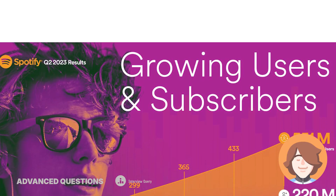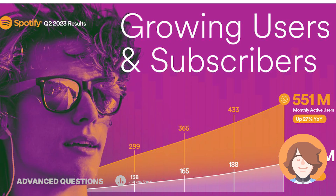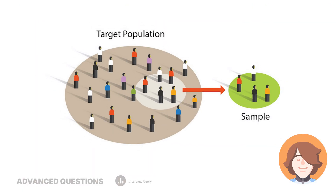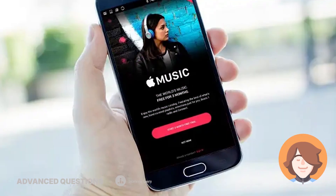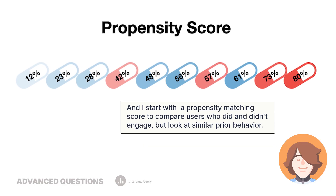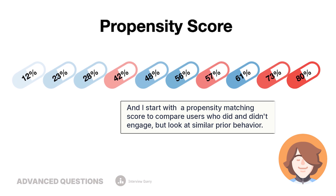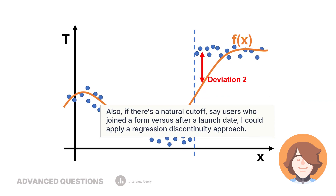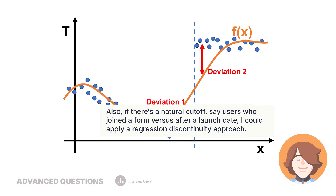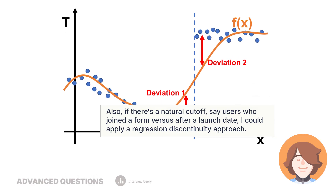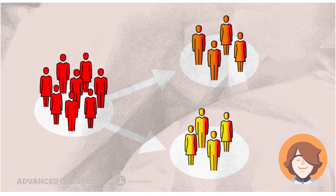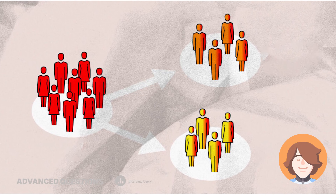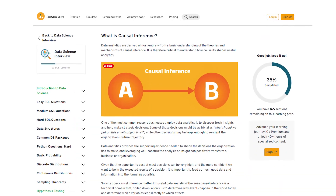I'd start with propensity score matching to compare users who did and didn't engage but look at similar prior behavior. Also, if there's a natural cutoff — say users who joined before versus after a launch date — I could apply a regression discontinuity approach. Alternatively, I could use a difference-in-differences setup: compare changes in engagement over time between playlist users and a control group. If you want to check out more of this, you can go on Interview Query and read our course on causal inference.